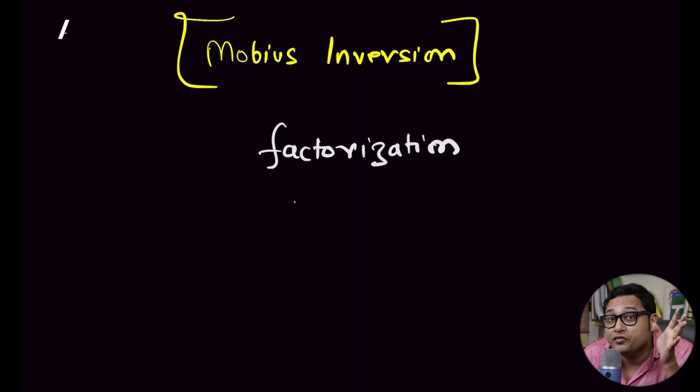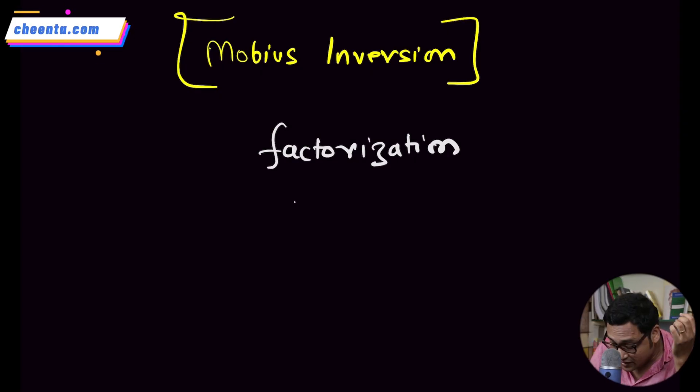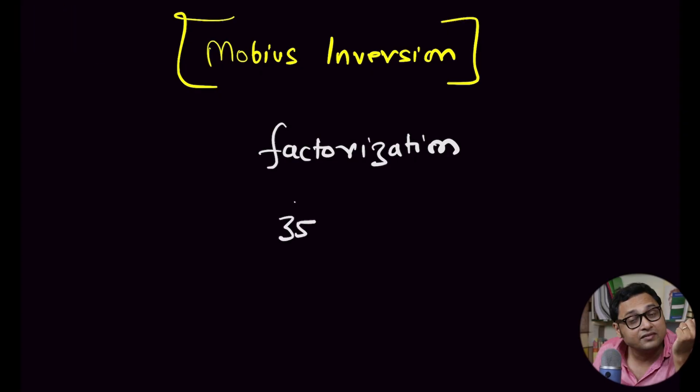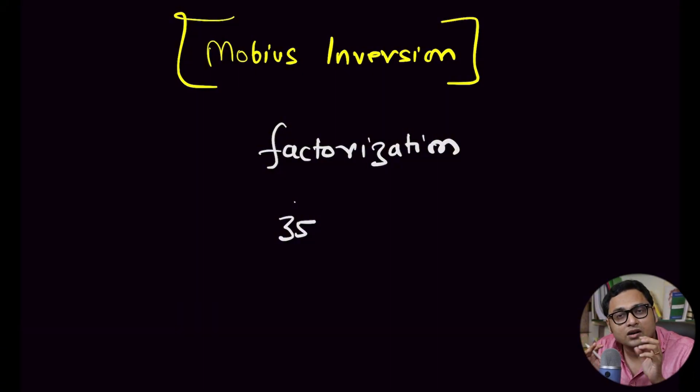We all know factorization. For example, if you have the number 35, you can prime factorize it — you can write it as a product of smaller numbers: 5 times 7. But factorization philosophically means that you have a big thing and you want to write it down by breaking it into smaller things. Why? Because sometimes if you understand the parts, you may hope to understand the entire thing.